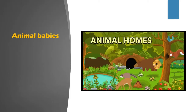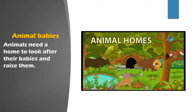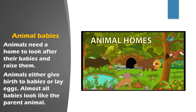After the sounds of animals, we are going to learn about animal babies. Animals need a home to look after their babies and raise them — just as we need a house to stay, animals also need a home where they keep their babies and take care of them. Animals either give birth to babies or lay eggs. Almost all babies look like the parent animal — a baby of a cow will look like a cow, so they resemble their parents.